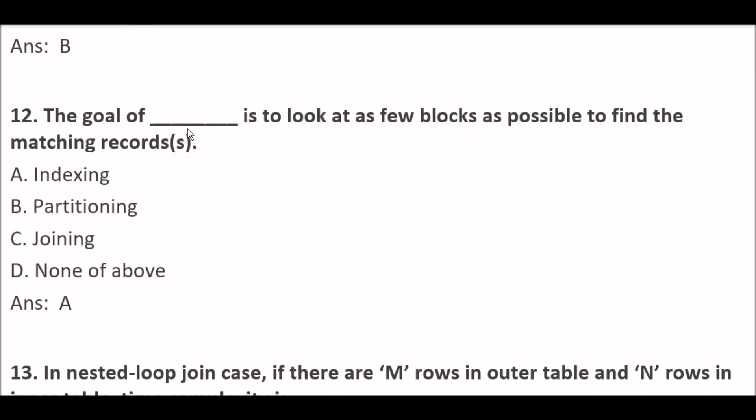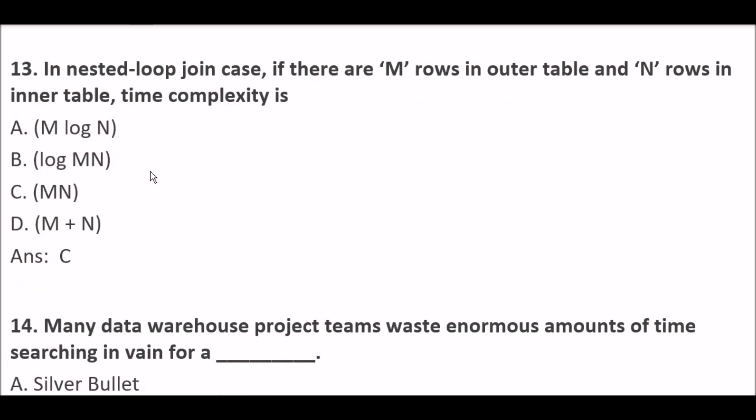Next question. The goal of blank space is to look at as few blocks as possible to find the matching records. Option A: Indexing. Option B: Partitioning. Option C: Joining. Option D: None of the above. Right answer is Option A — Indexing. The goal of indexing is to look at as few blocks as possible to find the matching records.